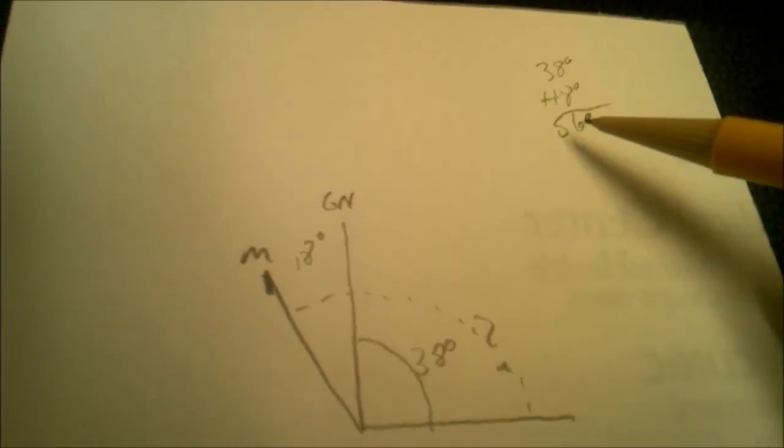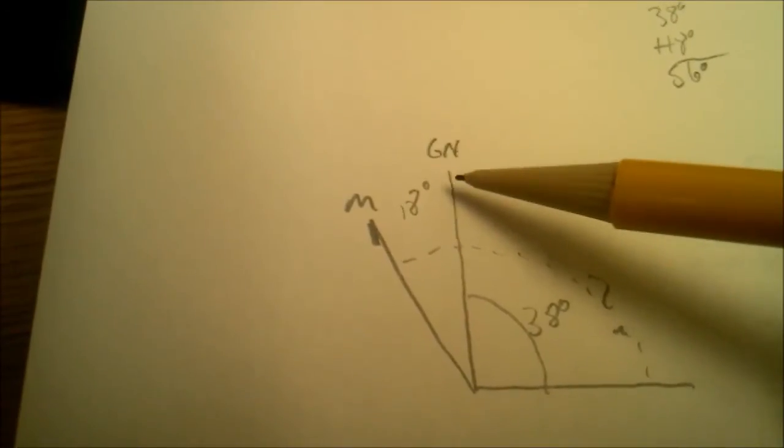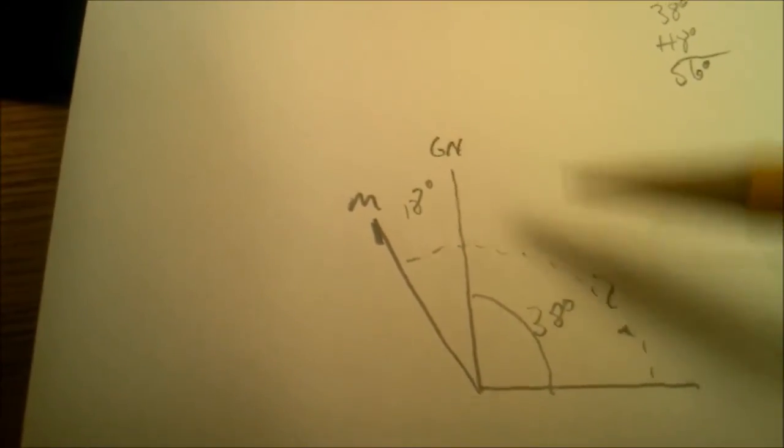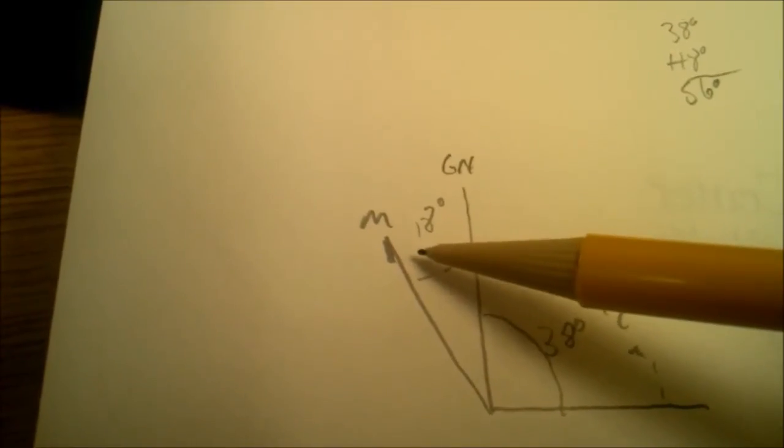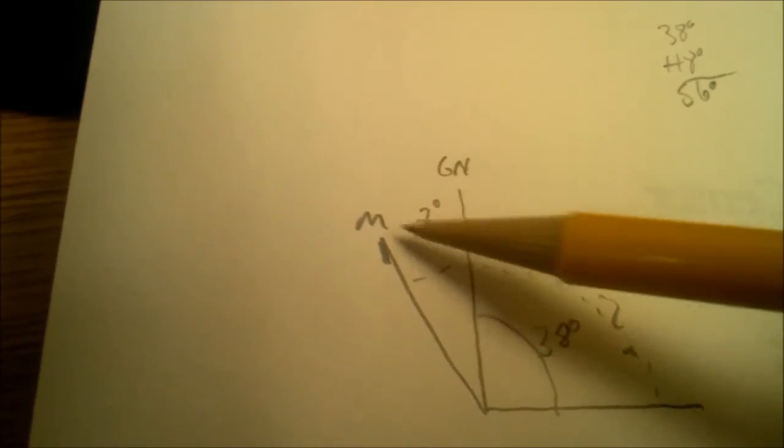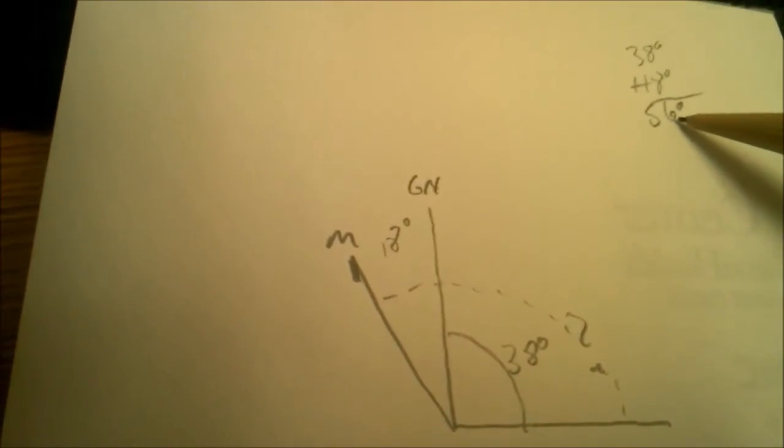So that means that after I've measured my angle on the map at 38 degrees, I'm going to have to add 18 degrees to that in order to get the proper magnetic. So on my compass, I would plot 56 degrees.